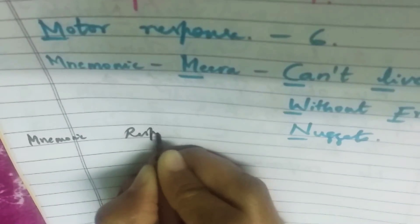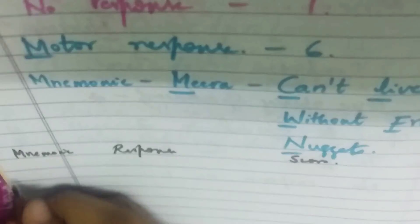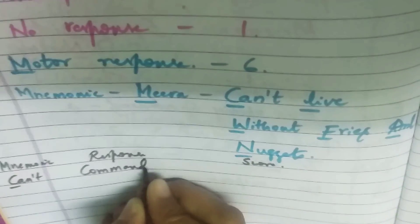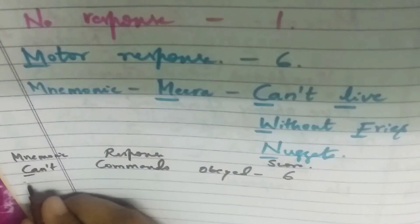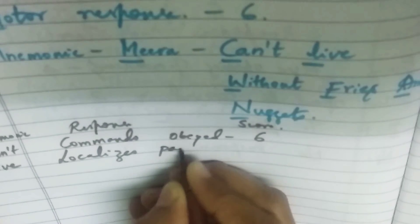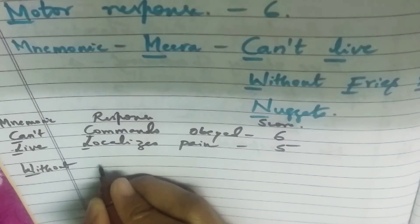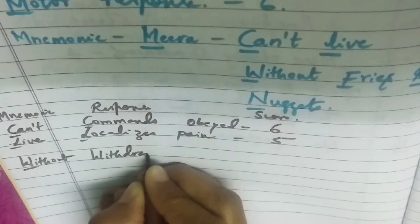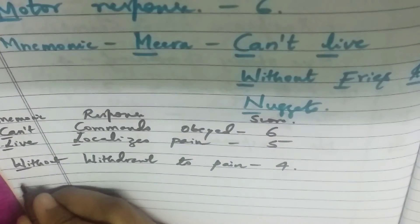Let's see, friends, the mnemonic and the respective response. So, mnemonic, response, and the scores. Can't, mirror says I can't, mirror, that can't see means commands are obeyed by the patient, so we will give six. And live, it is localizes the pain stimulus, so it is five. When the patient localize the pain stimulus, it is five. Without, W, we give it as withdraw to pain stimulus, so I would give it as four.